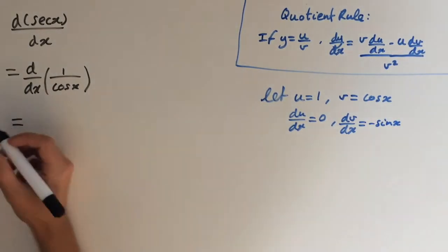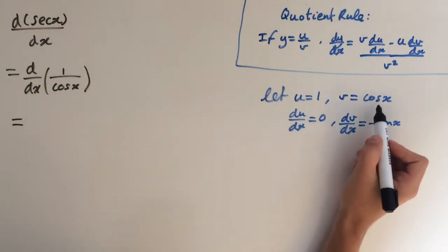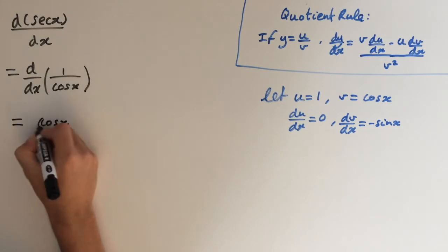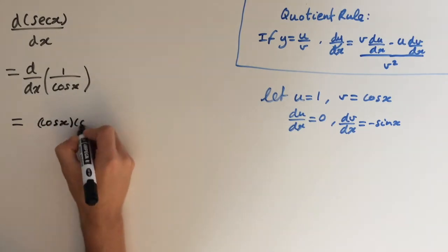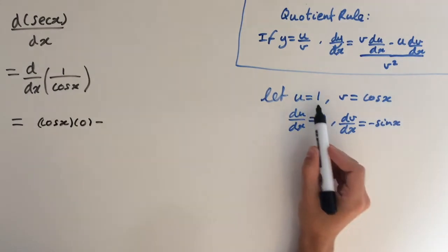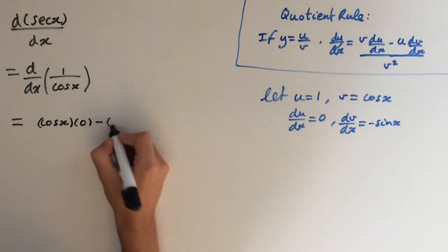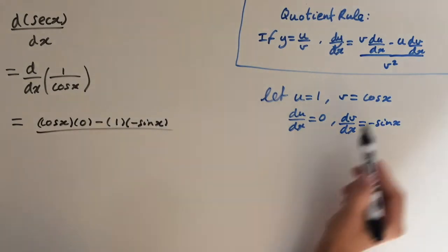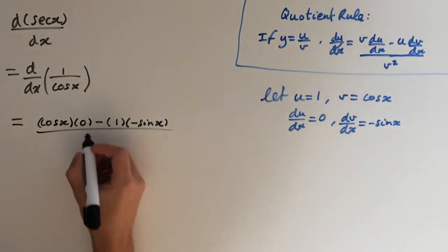So this will give us v times du dx, so cosine of x times 0 minus u times dv dx, so 1 times minus sine of x. And on the bottom we're going to get v squared, so cosine of x squared.